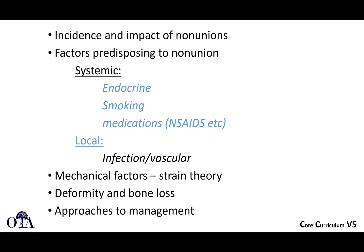We'll talk about the incidence and impact of non-unions, factors that predispose a patient to non-union including systemic factors such as endocrine issues, smoking, and medications. There are also local factors like infection and vascular compromise, as well as mechanical factors. We'll focus on strain theory in this first video, and in the next couple of videos we'll cover deformity, bone loss, and approaches to management.